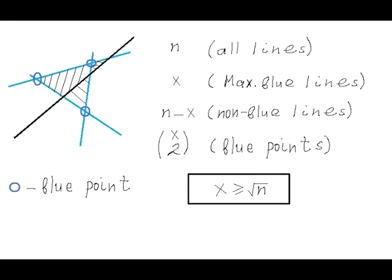In the general case, n is the number of all lines, and x is the maximal number of blue lines that do not create any finite region with the entire boundary painted in blue. We see in this example three finite regions — two triangles and one quadrilateral — and none of them has the entire boundary painted in blue. Obviously, n minus x is the number of non-blue lines. The number of all points of intersection of blue lines, which we will call blue points, is the number of combinations x choose 2.